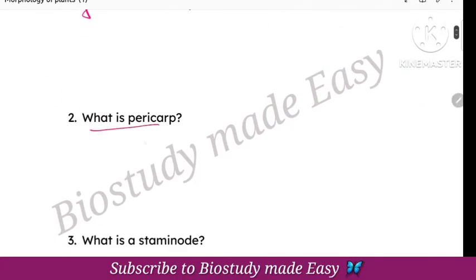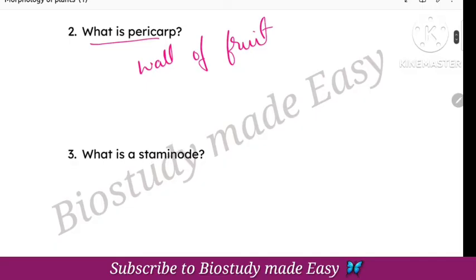What is Pericarp? Pericarp is the wall of the fruit. Next, what is Staminode? A sterile stamen is called a Staminode.